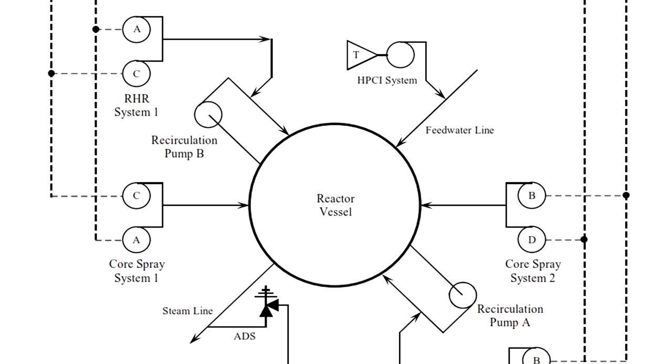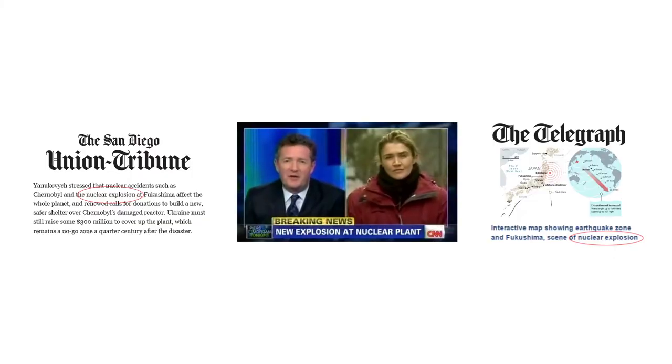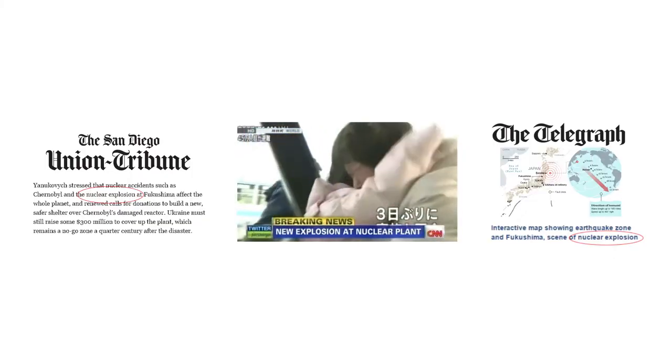They had multiple backup diesel generators, and each one probably had a very high probability of turning on. The tsunami came and knocked them all out. Tell me what the latest is in relation to the third nuclear explosion. How worried are people?